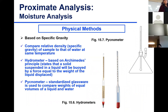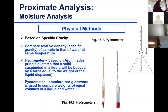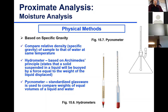An older method is the pycnometer method, based on specific gravity. It is mostly for liquid samples — not solid samples — such as milk. You can also use the hydrometer for quick measurement of moisture content in milk: a solid suspended in liquid is buoyed by a force equal to the weight of the liquid displaced.